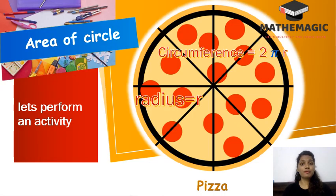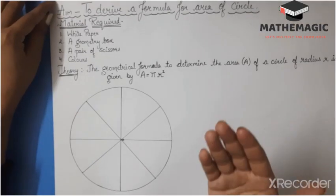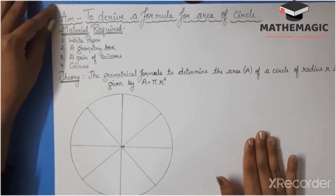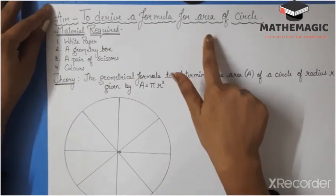Now, time to perform an activity for finding the area of a circle. Today, the aim of our activity is to derive a formula for the area of a circle.